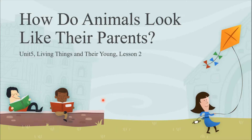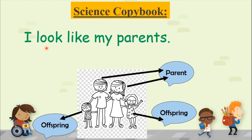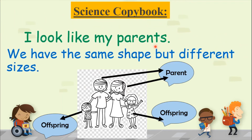How do animals look like their parents? We wrote in our science copybook: I look like my parents. We have the same shape but different sizes. Let's look at the picture — parents and offspring have the same body shape. These are the parents and this is the offspring.